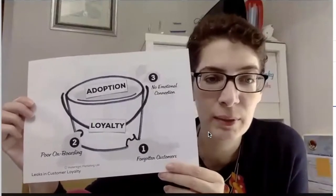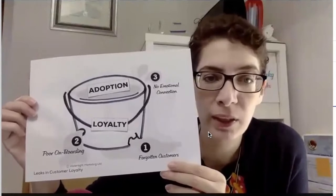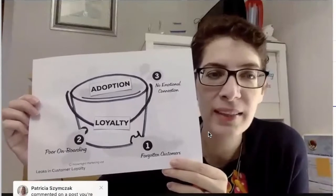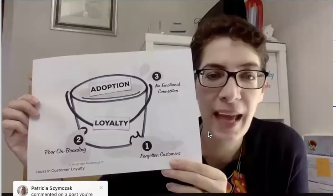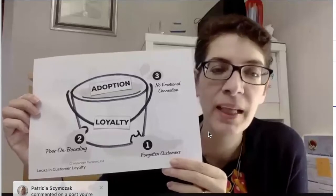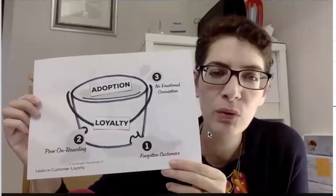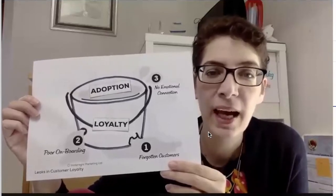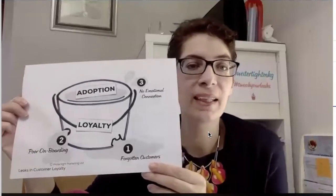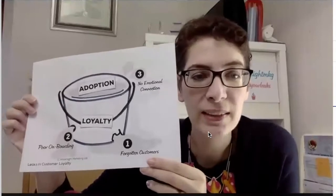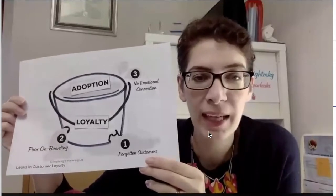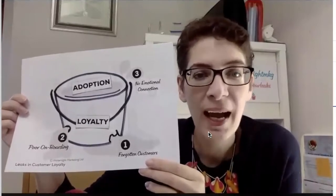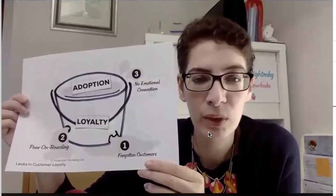Leak number one is forgotten customers. Leak number two is about onboarding — welcoming your existing customers. Leak number three is about emotional connection. In terms of what that means for your existing customers now in this really difficult time: for emotional connection, I'd advise you to think about your tone of voice, making sure your humanity, warmth and caring is coming across. Take some time to look at all your communications — automated email sequences and that sort of thing — and check the tone and copy to make sure it's appropriate for the time that we're in.